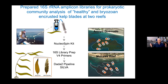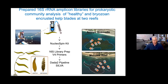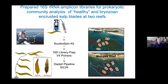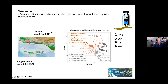She sampled many samples from Arroyo Camato and Mohawk Reef over a variety of different times. The basic take-home was that there are consistent differences over time and site with regard to community structure on healthy blades versus bryozoan-encrusted blades. This NMDS plot demonstrates that independent of sampling timing and location — whether Arroyo Camato or Mohawk — there was clear separation between healthy unencrusted blades and bryozoan blades.